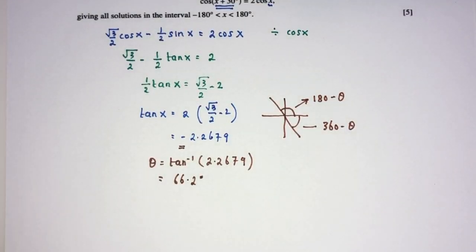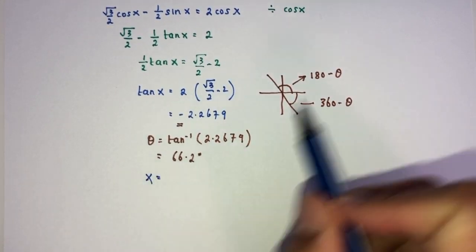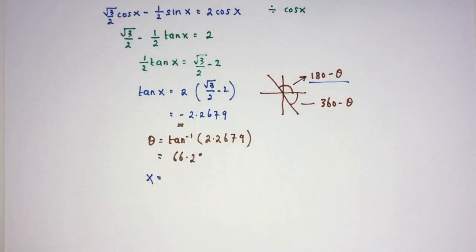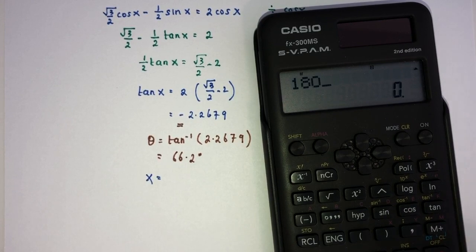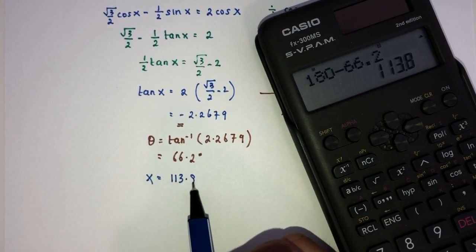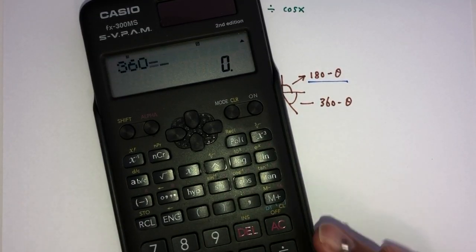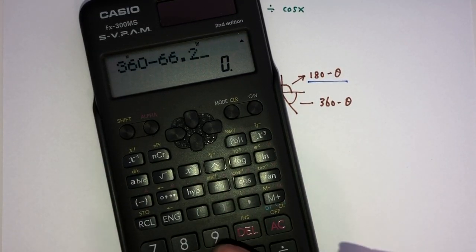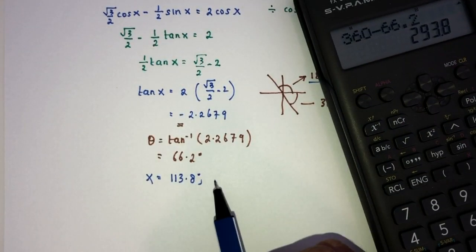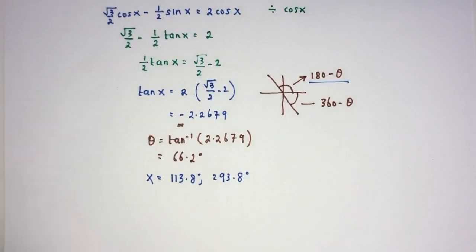But, again, we don't care about theta. We want to find x. x will be found according to your quadrant, will be 180 minus theta. So, 180 minus 66.2. That should be 113.8. And then 360 minus 66.2. That will be 293.8. Here you go. So, this is your two values for x, as we need.